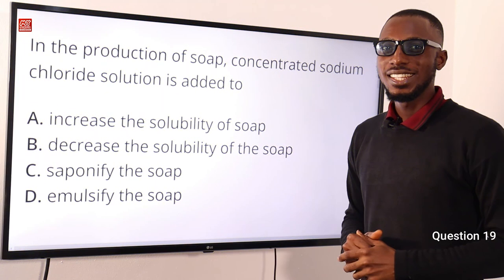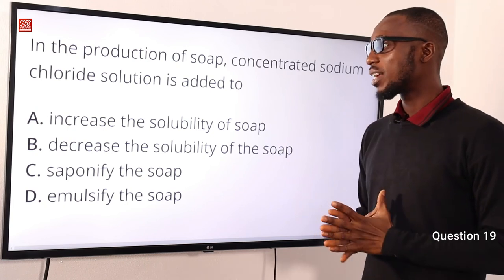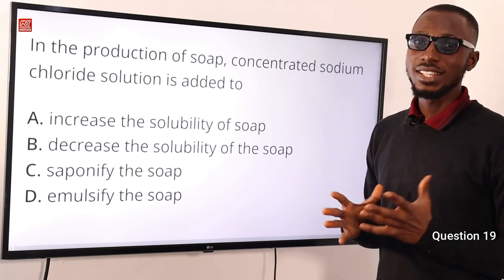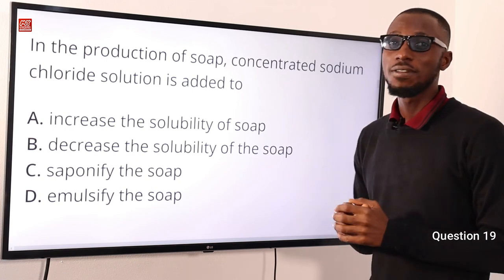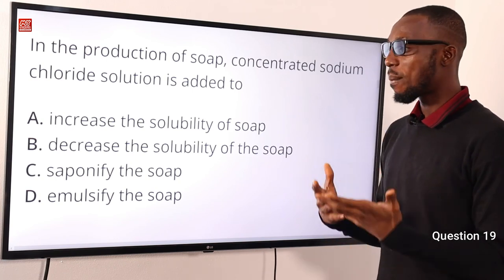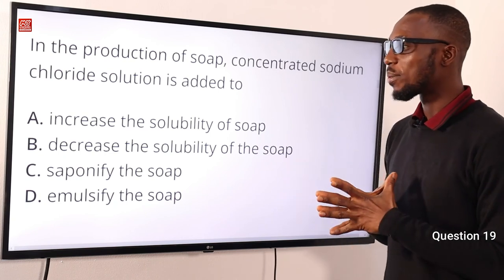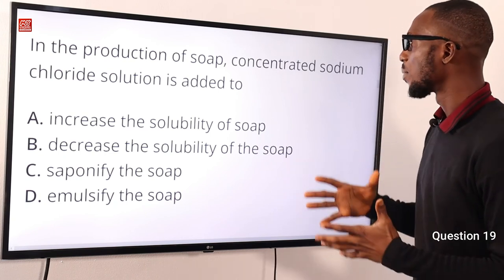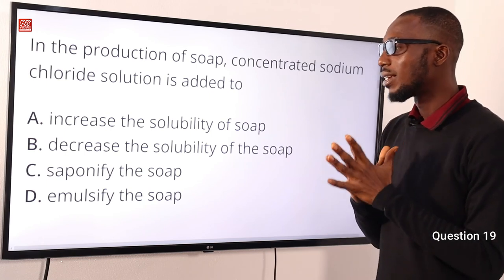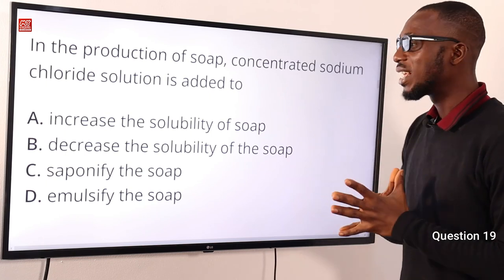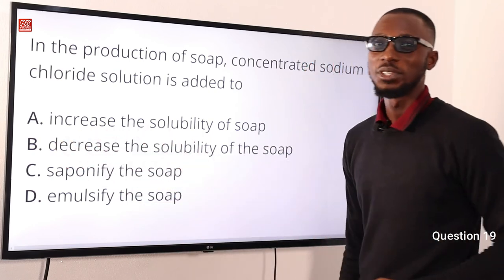Question 19. In the production of soap, concentrated sodium chloride solution is added to do what? It is added to decrease the solubility of the soap so that it can come out as a cake on cooling. The correct option is option B.